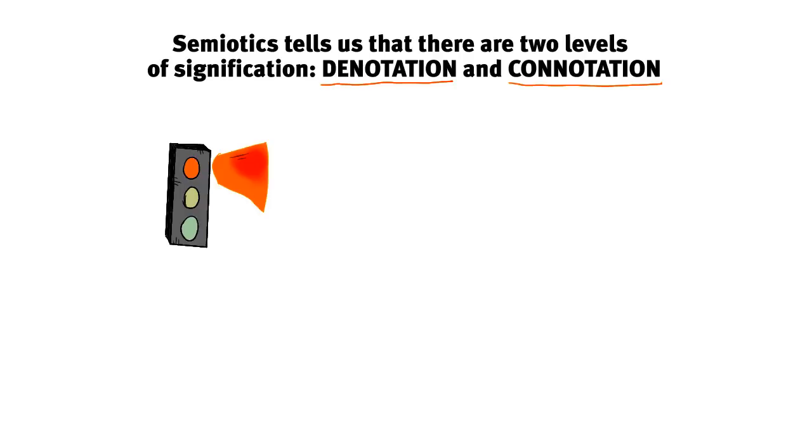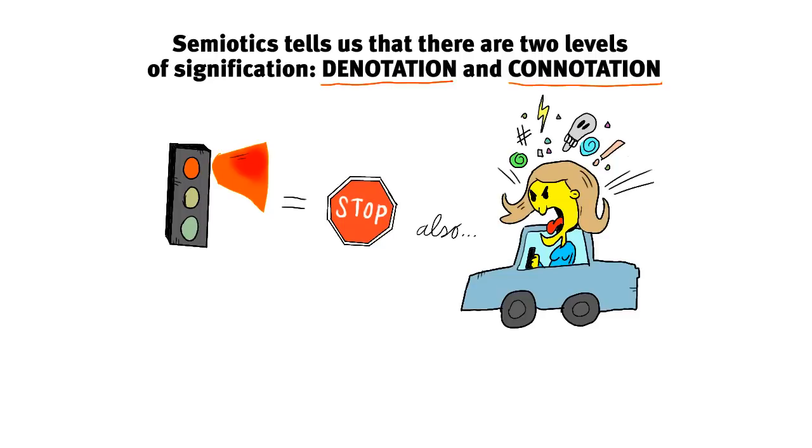Connotation is the second level of signification. It is what the denotation represents, all associated meanings. In this case, it means stopping, but this also results in anger and frustration for Judith because she might be late at her interview.